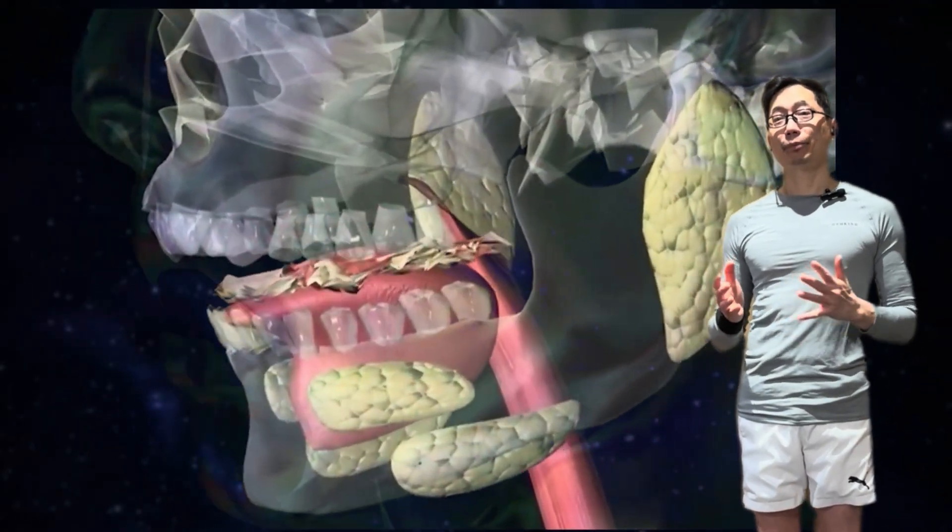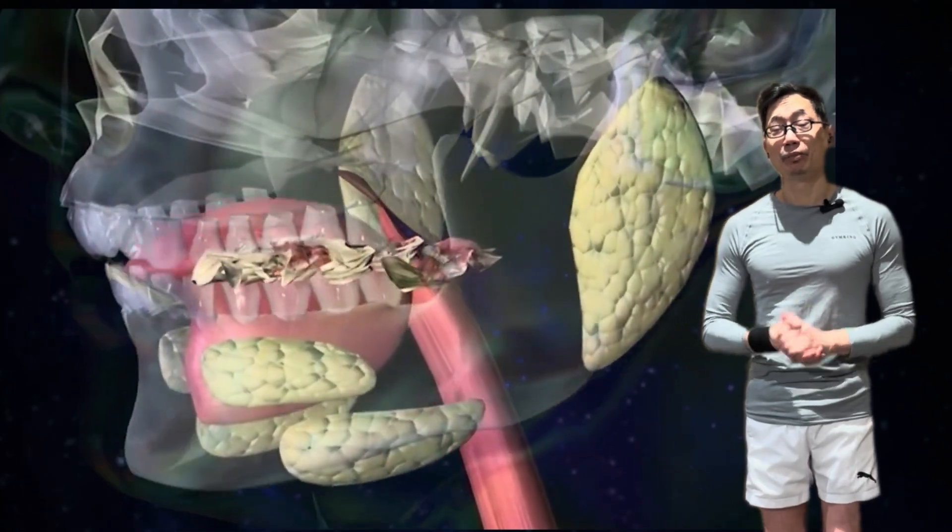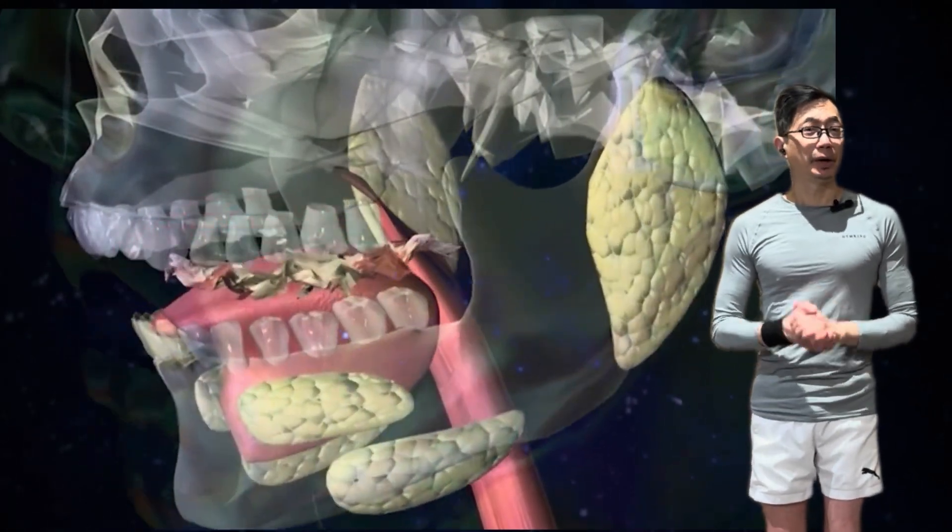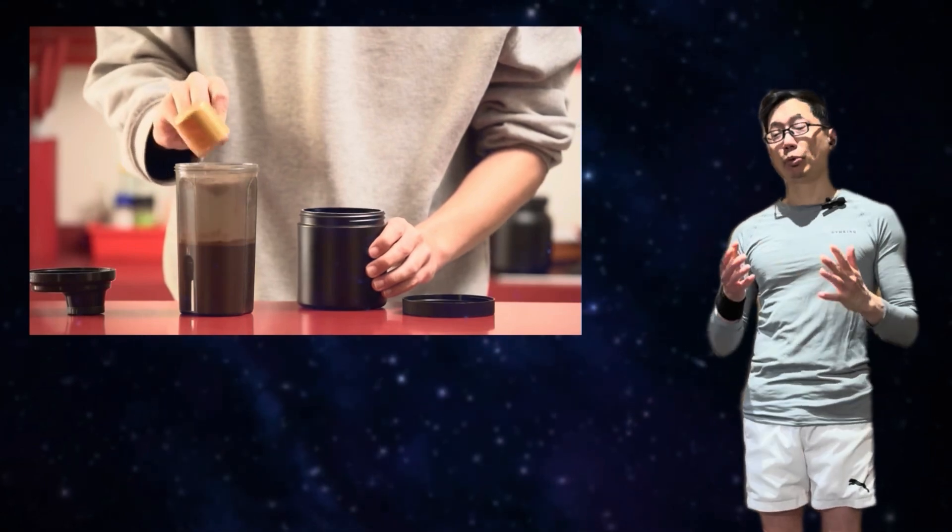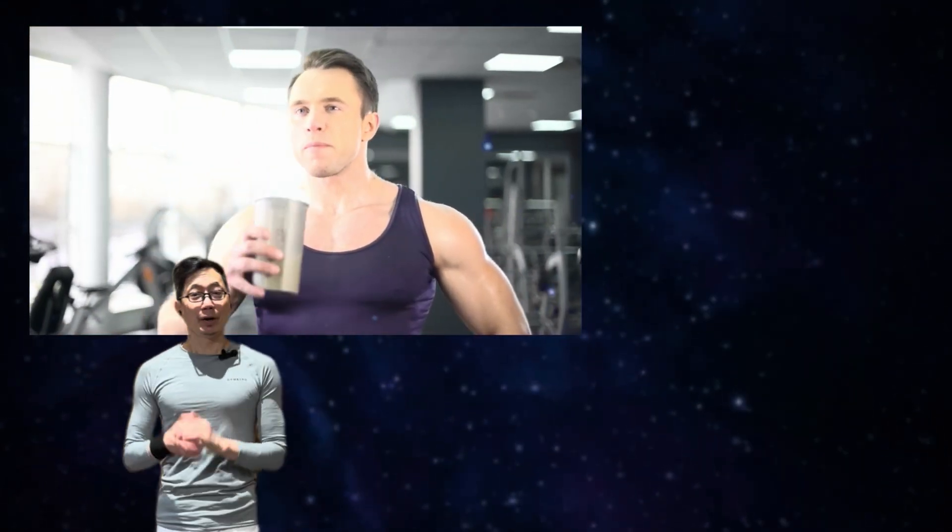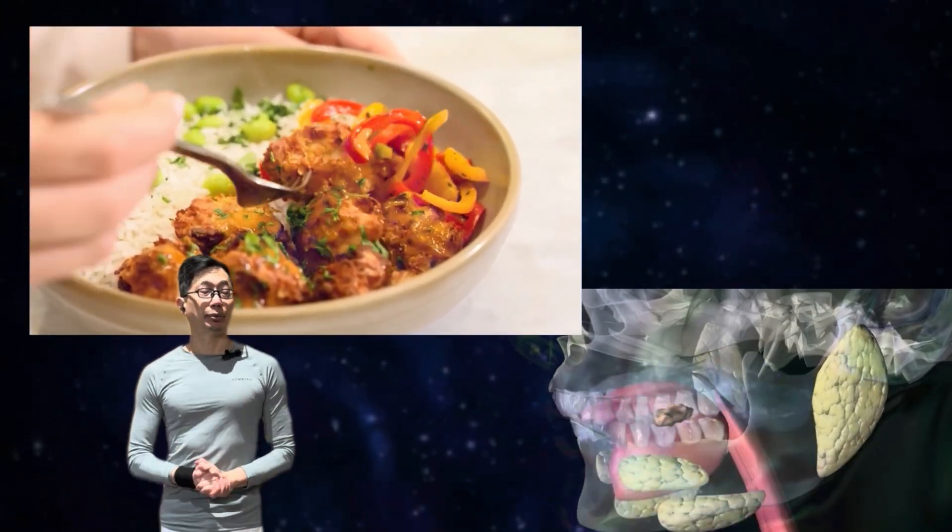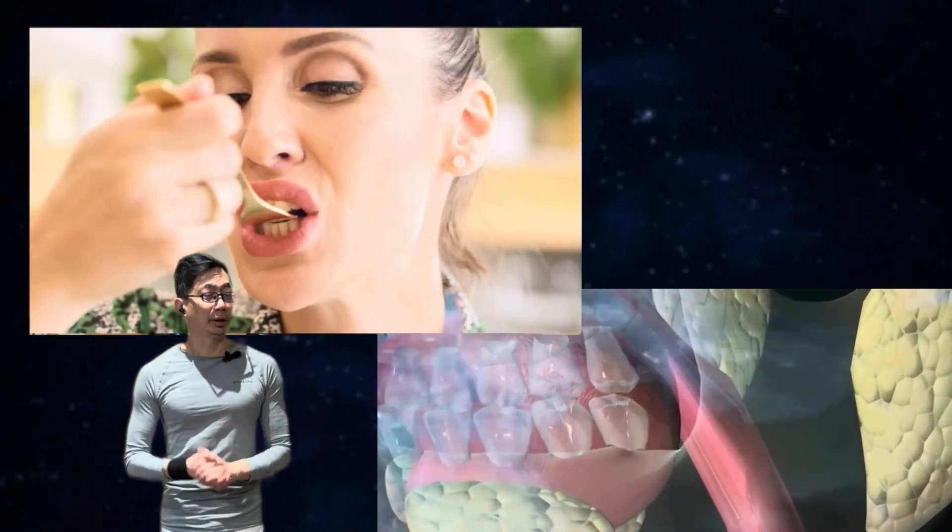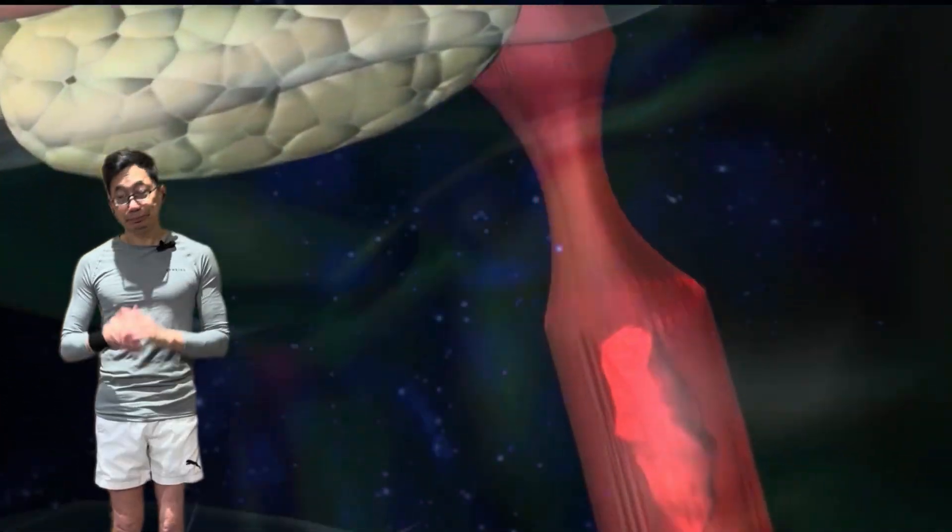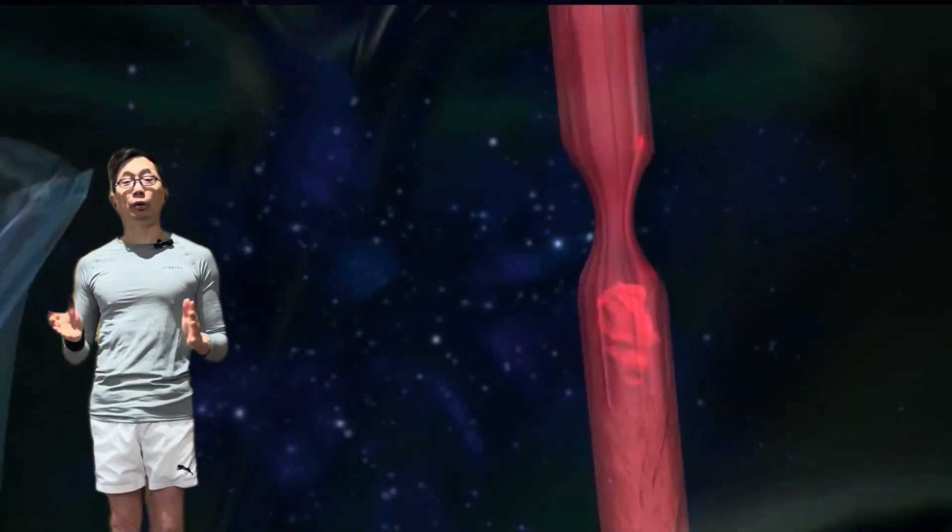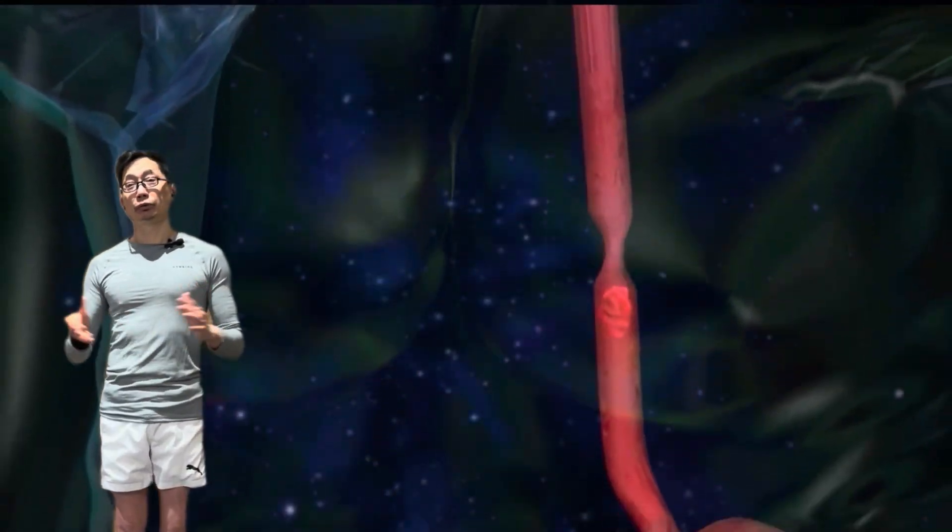But again, digestion is primarily taking place here in the oral cavity through chewing and saliva. Now, in the case of, say, like a protein shake, there is not much chewing going on there because we usually just string that down. However, if you are eating protein-rich foods like chicken or steak, you will be doing more chewing or mechanical digestion. But in either example, we will take that food from the oral cavity and swallow it down the esophagus and then into our stomach.